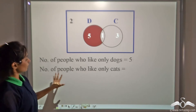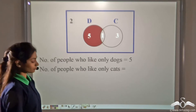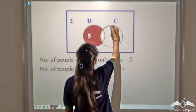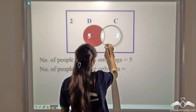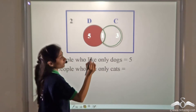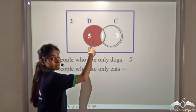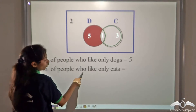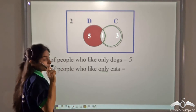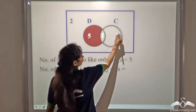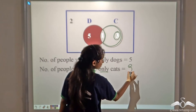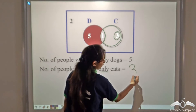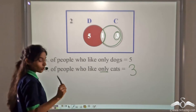Now what is the number of people who like only cats? The people who like only cats do not like dogs at all, so we exclude the person in the intersection. That gives us the cats-only region.